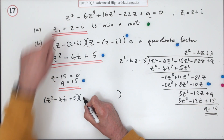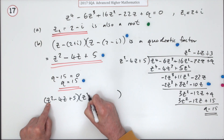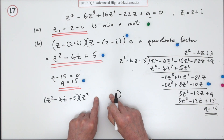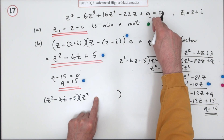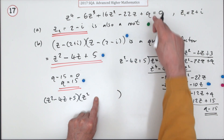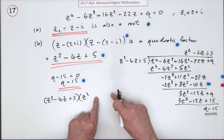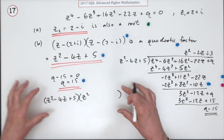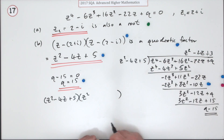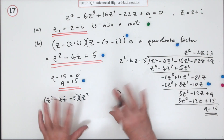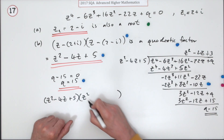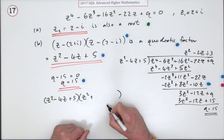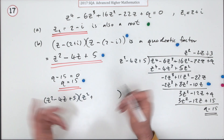Since the polynomial starts z⁴ and one factor starts z², the other factor must start z². I don't know the other two coefficients, so I'll call them a and b. If you did know the constant at the end, you'd immediately know b, and there'd be only one thing to find — much faster than algebraic division. Here it's about even, so I'll call the unknown coefficients a and b.